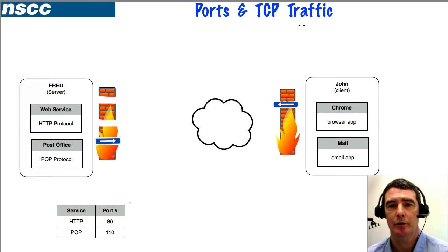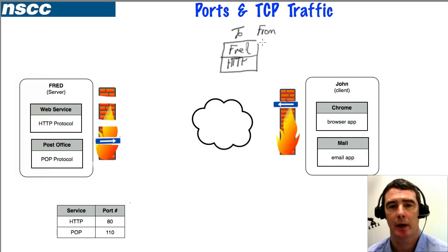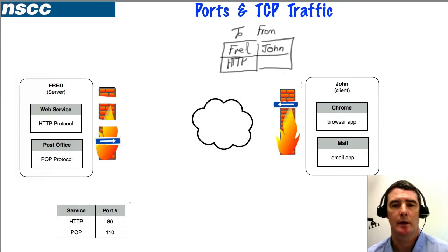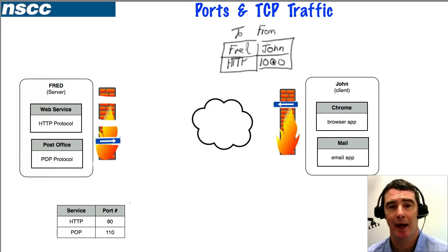John is going to create a packet. The addressing is the first part of the information — a to field and a from field. We're sending this packet to Fred the server, to the web service on well-known port 80, or HTTP. It's coming from John. The source port is not a well-known port; applications generally pick a random port above 1,000, so we'll just pick 1,000. It's important that we have a source port, because when traffic comes back, that number tells us which application to send the return information to.